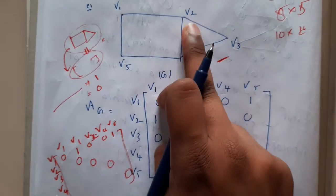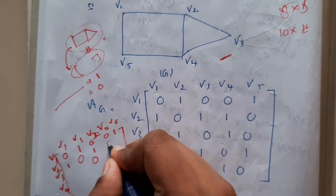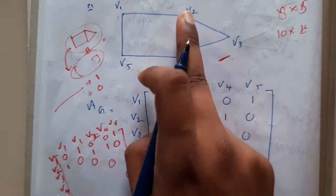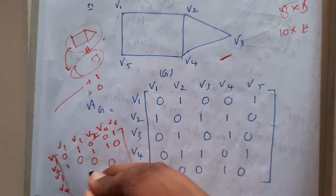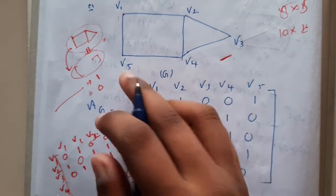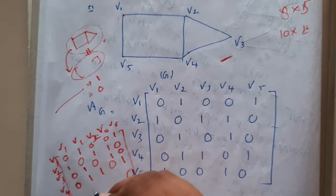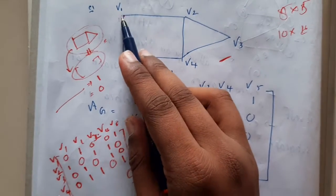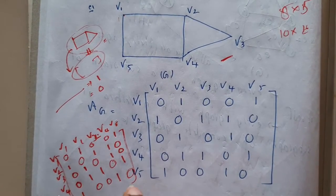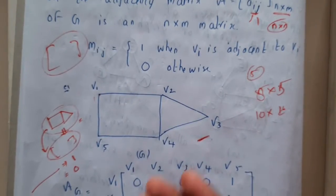From v2 we have paths to v1, v3, and v4 — so those are 1 and v5 is 0 since there is no direct path. From v3 we have paths to v2 and v4. From v4 we have paths to v2, v3, and v5, with v1 being 0. From v5 we have paths to v1 and v4, with the rest as 0. If you observe, these two matrices are exactly the same — the matrix is symmetric.